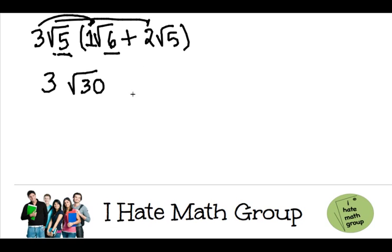Then, you're going to do 3 times 2, which is just 6, and the square root of 5 times the square root of 5 is just 25. Well, I'm almost done.